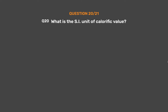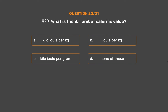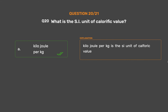Question number 20: What is the SI unit of calorific value? Option A: Kilojoule per kilogram. Option B: Joule per kilogram. Option C: Kilojoule per gram. Option D: None of these. The correct answer is Option A: Kilojoule per kilogram. Kilojoule per kilogram is the SI unit of calorific value.